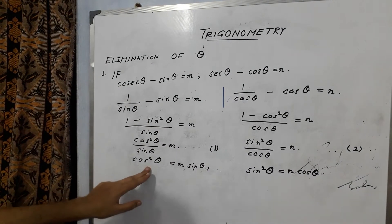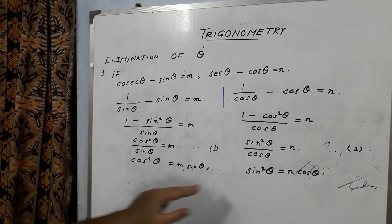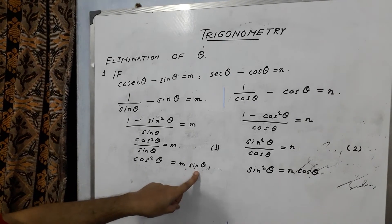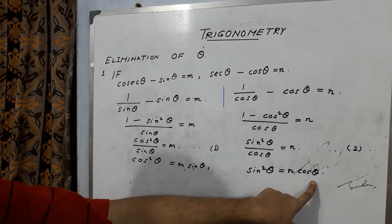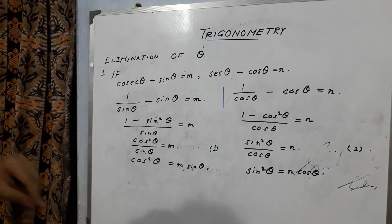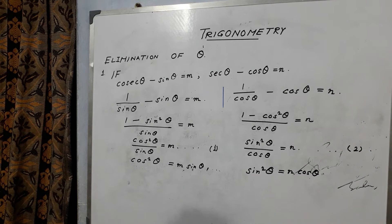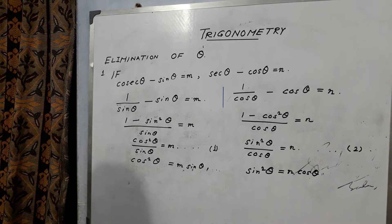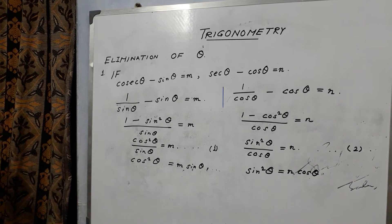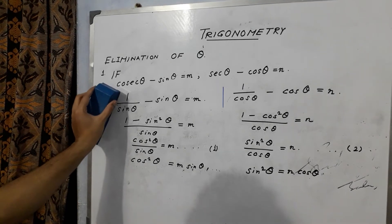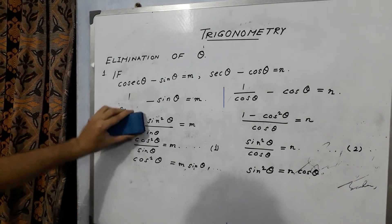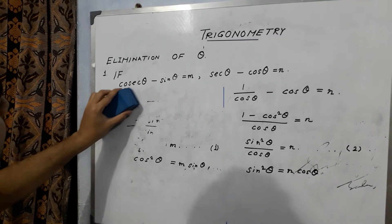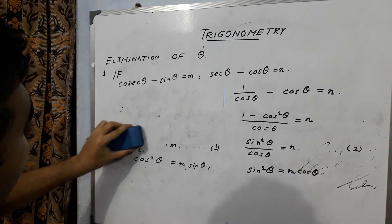We know cos square theta plus sin square theta is 1. So if we can eliminate sin theta and cos theta we will eliminate theta. But that is not possible directly, so we try some different means — let us see what happens if we try multiplying these two equations.